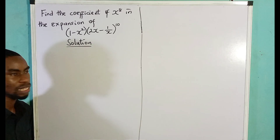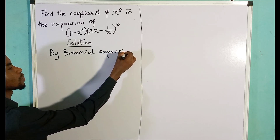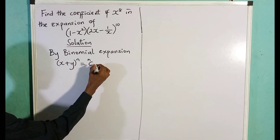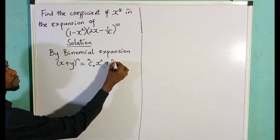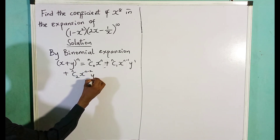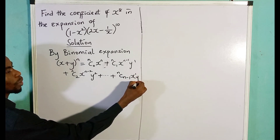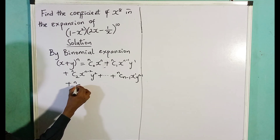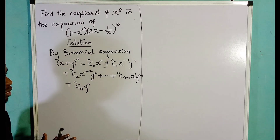I'll be using a binomial expansion. By binomial expansion, if we have (x + y) to the power of n, it's the same thing as saying: n choose 0 times x^n times y^0, plus n choose 1 times x^(n-1) times y^1, plus n choose 2 times x^(n-2) times y^2, and we keep adding until n choose (n-1) times x^1 times y^(n-1), plus n choose n times y^n.